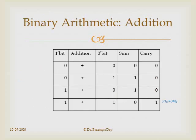For binary addition: 0+0 gives sum 0 carry 0; 0+1 gives sum 1 carry 0; 1+0 gives sum 1 carry 0; and 1+1 gives sum 0 carry 1. This is similar to decimal: 9+1 gives 0 with carry 1, making 10. Similarly in binary, 1+1 gives sum 0 and produces carry 1.